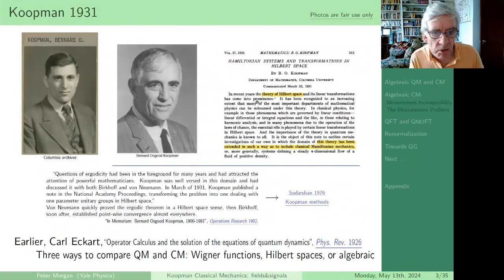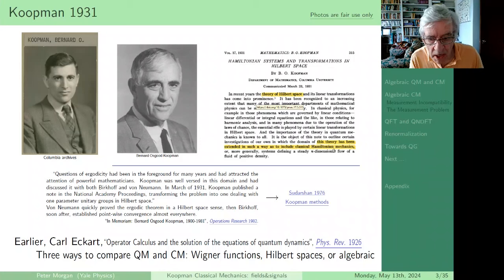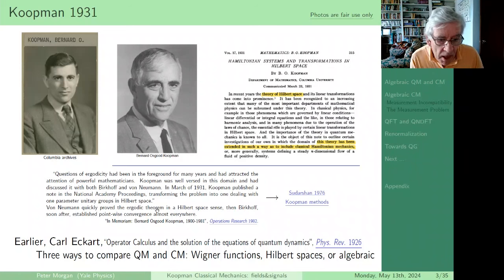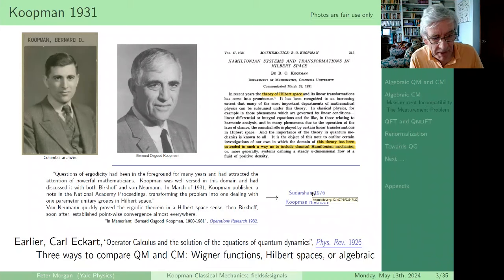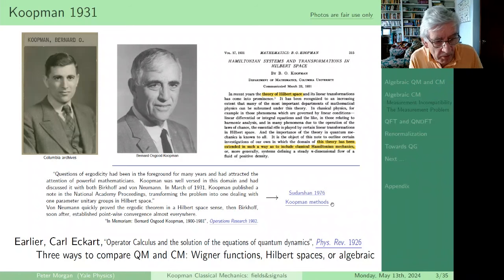Koopman, in 1931, suggested that we could construct a Hilbert Space Formalism for classical Hamiltonian mechanics. That was used almost immediately by Birkhoff and von Neumann to prove two different versions of the Ergodic theorem. It almost drops off the map; one hardly sees any literature until Sudershan in 1976 points out that this is a useful formalism for discussing chaotic dynamics, and that has become quite a vibrant literature called Koopman Methods since then.